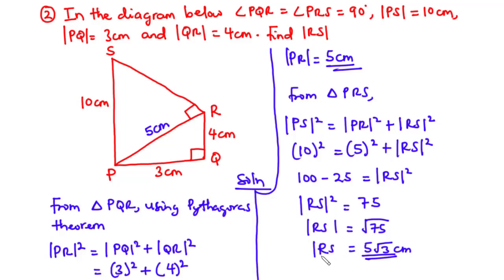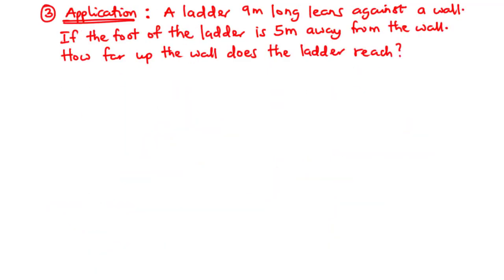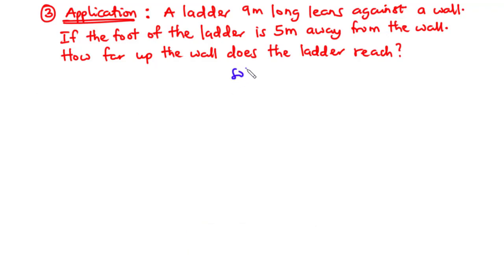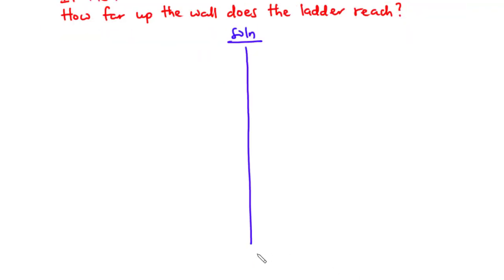So the length of side RS is 5√3 centimeters. Now let's solve one application question. Question three: a ladder 9 meters long leans against a wall. If the foot of the ladder is 5 meters away from the wall, how far up the wall does the ladder reach? The first thing we are going to do is draw a diagram.